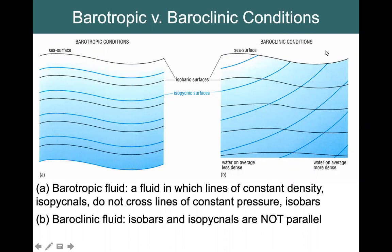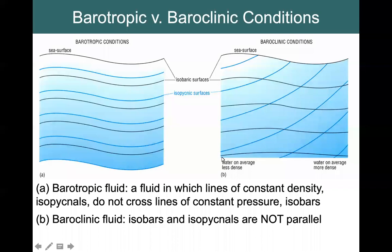On the other hand, we can have baroclinic conditions. Baroclinic conditions exist when there are lateral differences in density. In this case, the water on average is less dense on one side and more dense on the other side. We can see that by looking at our isopycnal lines. If I look at this isopycnal line, I see that it is sloping up and to the right. That means anywhere along this line it has the same density, and I know that density increases with depth. So the density at one depth on one side is greater than the density at that same depth on the other side.